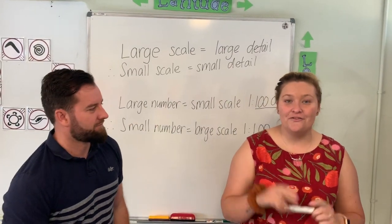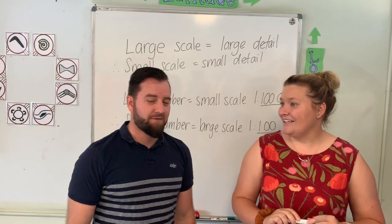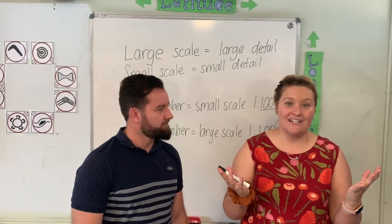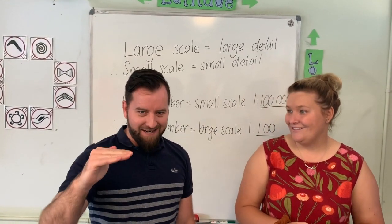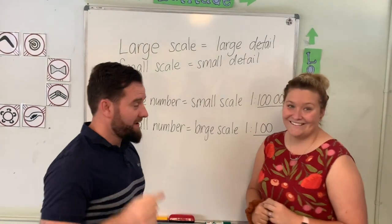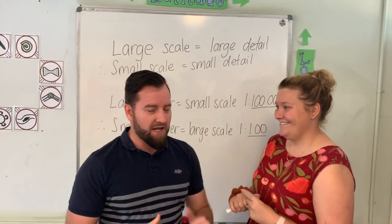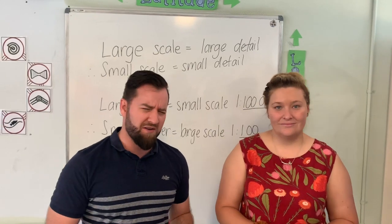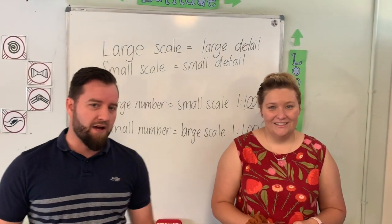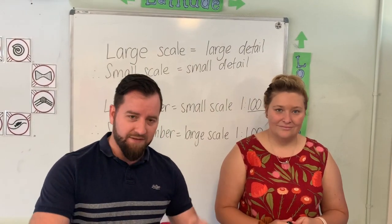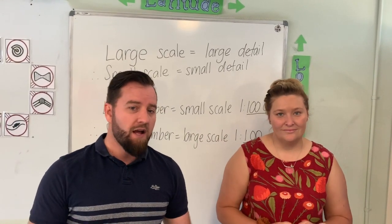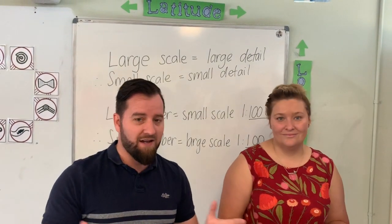We're here to show you the two rules you need to know to understand large scale and small scale. The first rule: big scale, big detail. Small scale, small detail. So if you have a very detailed map — think of a road map or a street map, which is what we used to have before GPS was invented — if you were trying to get around town, you would want a map with streets and houses and individual buildings and where the traffic lights are. You would need a super detailed map of the town. That map has a lot of detail. Big detail — big scale. It's a very large scale map.